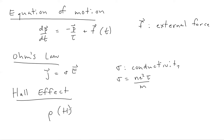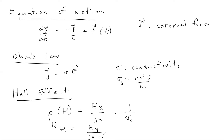We also talked about the Hall effect and derived the magnetoresistance rho as a function of magnetic field H — it equals one over sigma naught, the bare Drude conductivity. We derived the Hall coefficient, which is the transverse electric field divided by the longitudinal current times the magnetic field H, and it equals minus one over n e c. The Hall effect is one of the triumphs of the Drude model and is still used in experimental research today.